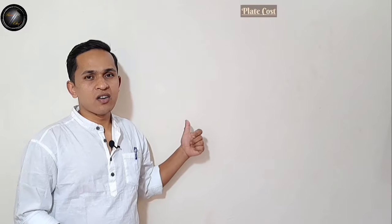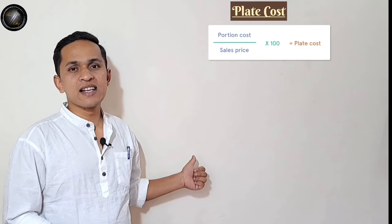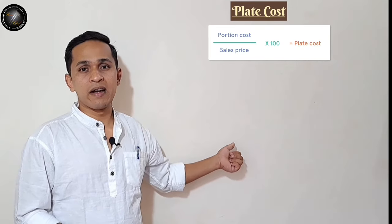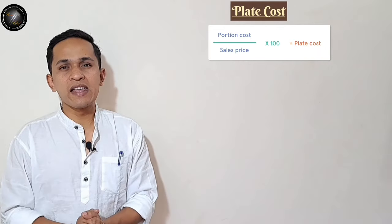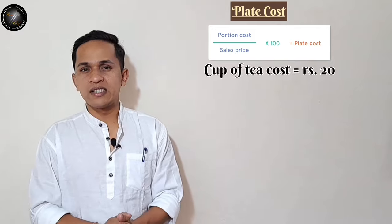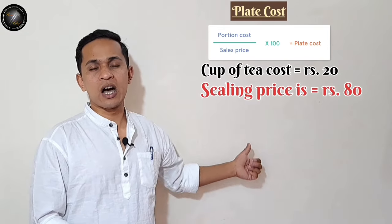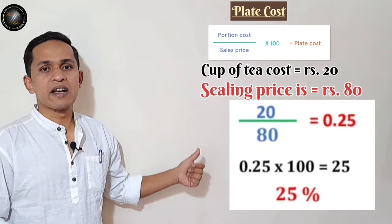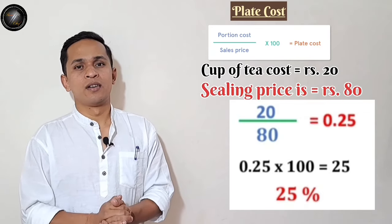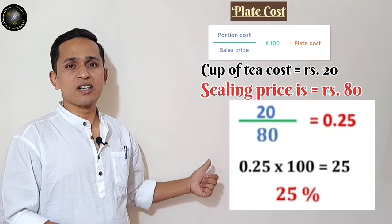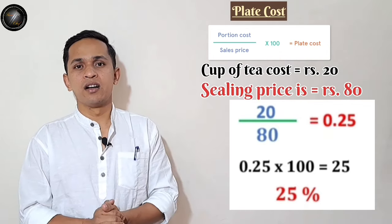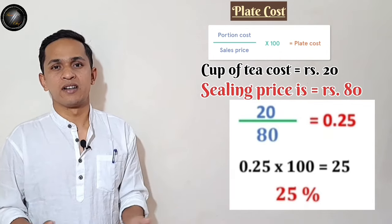First is plate cost or portion cost. The formula is: portion cost divided by sales price, multiplied by 100, equals portion cost percentage. For example, in my restaurant I am making a cup of tea for 20 rupees and the selling price is 80 rupees. So 20 divided by 80 equals 0.25, multiplied by 100 equals 25 percent — that is our cup of tea cost percentage.